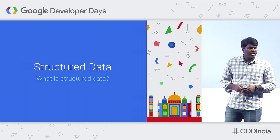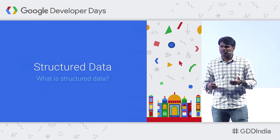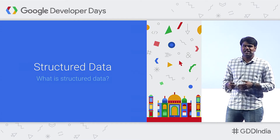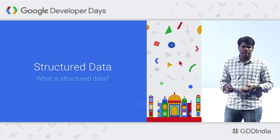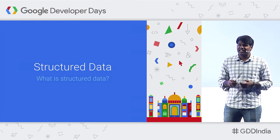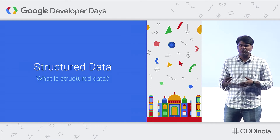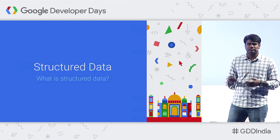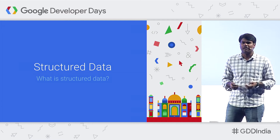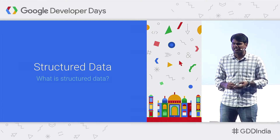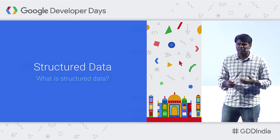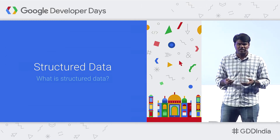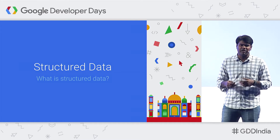Google Search has been constantly evolving to provide a great user experience for all our users. Since 1998, we've moved from Bluelinks to now having many different features like knowledge panel, live scores, and election results. But even today, without structured information from webmasters and content providers, we are still limited by what we can do.